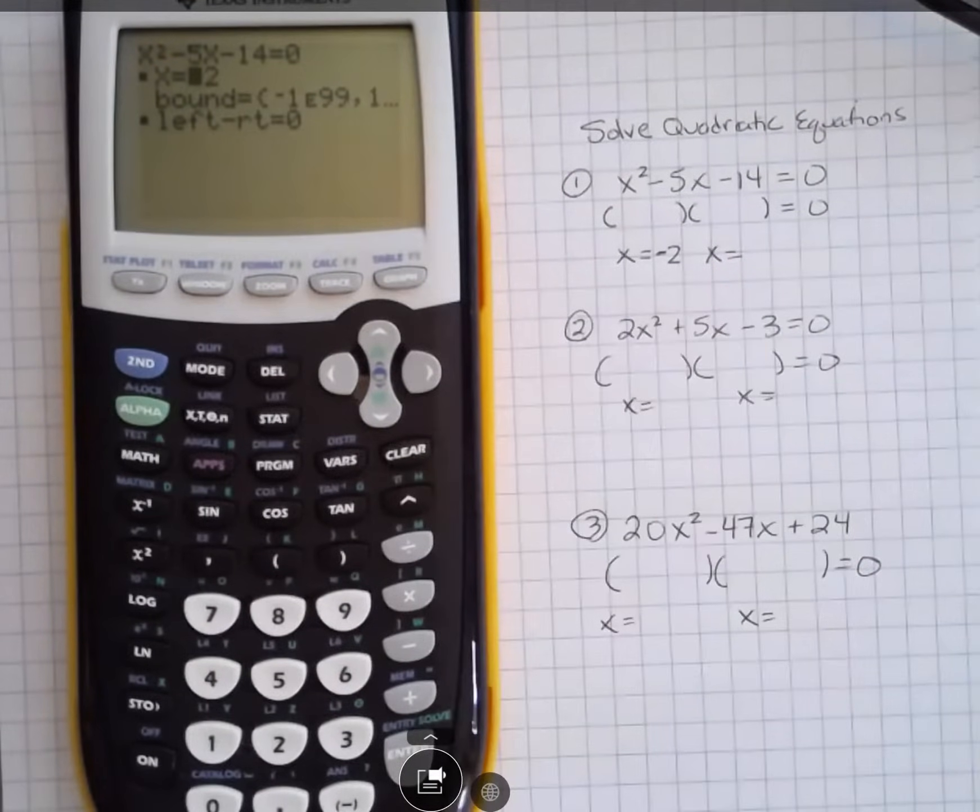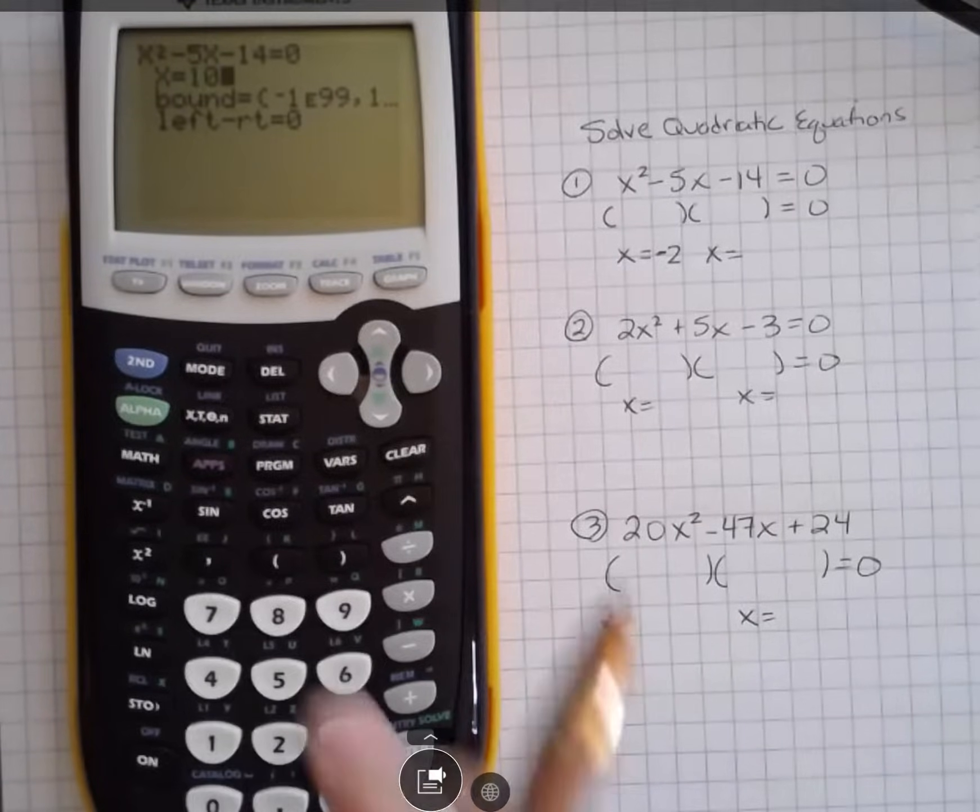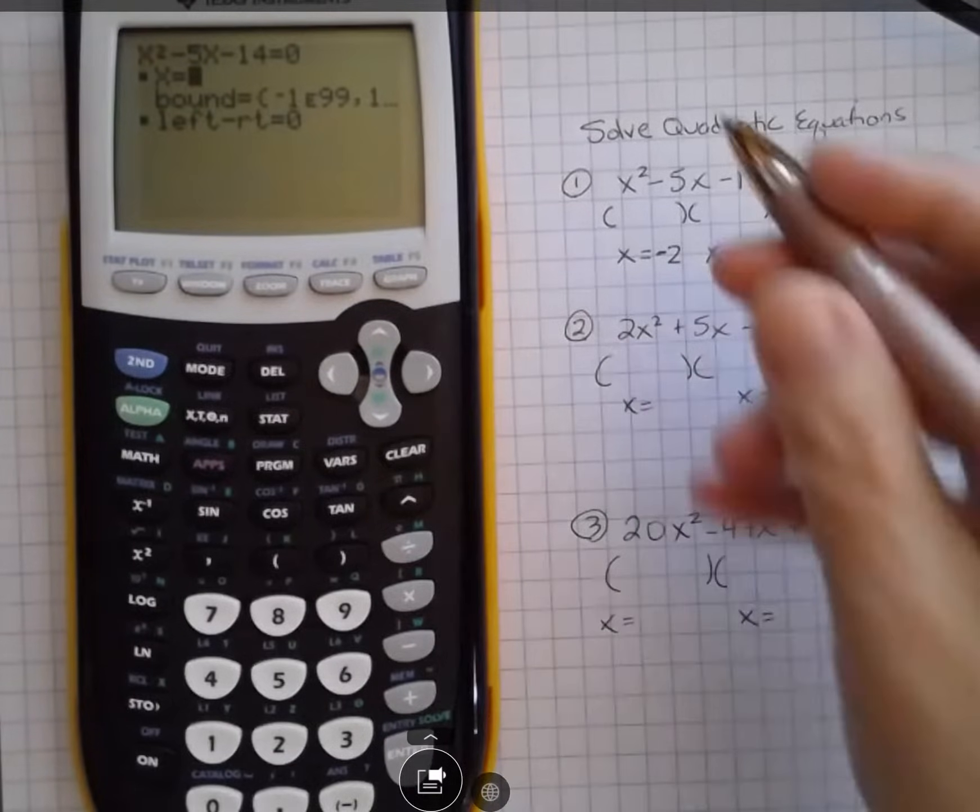You can see that I now have that little black box next to it. Now I want to guess some positive answer, so I'm going to guess 10, and then I'm going to hit Alpha Enter, and I'm going to get the answer of 7.